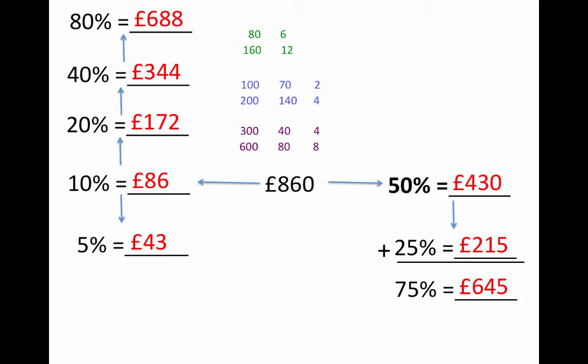There's the method I used to partition. So if I was asked to find 45%, I could use 40% and 5%, add those numbers together to get £387.